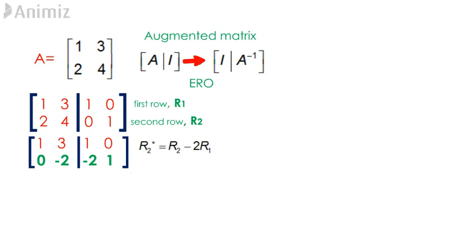Since the 2,2th element is negative 2, we need to multiply the old row 2 here by negative half. This gives us the new row 2 to be 0, 1, 1, negative half.